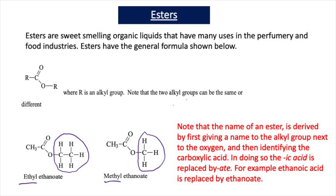When naming an ester, the first thing you do is look at the alkyl group that's attached to the oxygen in the ester. So if we look at our first example, we have C2H5 attached to an oxygen - that is an ethyl group. That means our ester's name is going to start with ethyl. For the second part of the name, we look at the rest of the molecule and choose the carboxylic acid it best resembles - it best resembles ethanoic acid, just missing a hydrogen. Therefore, we name this ester ethyl ethanoate.